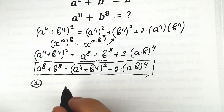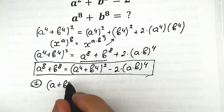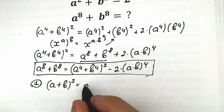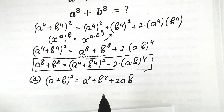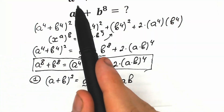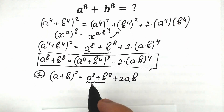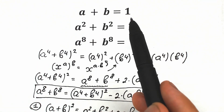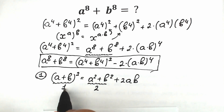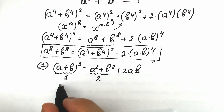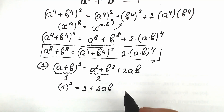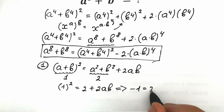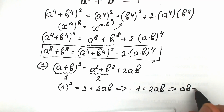This is our first step — find a times b. Let's write (a plus b) squared. This equals a squared plus b squared plus 2ab. Now, a squared plus b squared equals 2 from our given conditions, and a plus b equals 1. So we have 1 squared equals 2 plus 2ab, which gives us 1 equals 2 plus 2ab, so minus 1 equals 2ab, therefore ab equals minus one half.